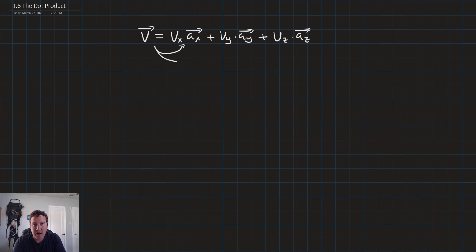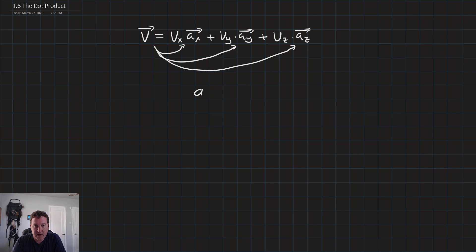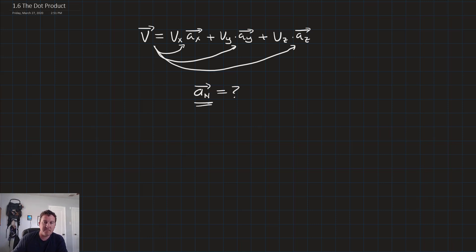Right now we're used to describing our vectors in terms of these standard unit vectors. But what if we had a unit vector in some weird, crazy direction? How could we describe v in terms of that random unit vector? That's where the dot product comes in.